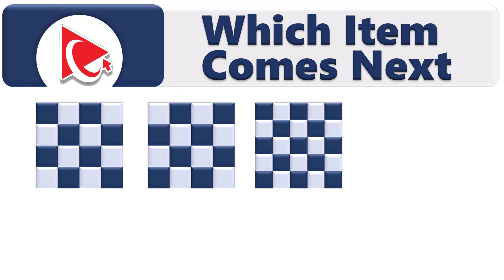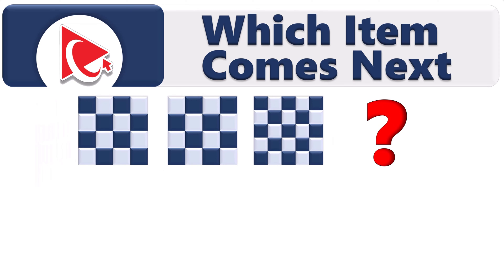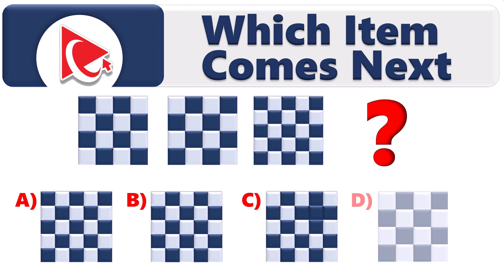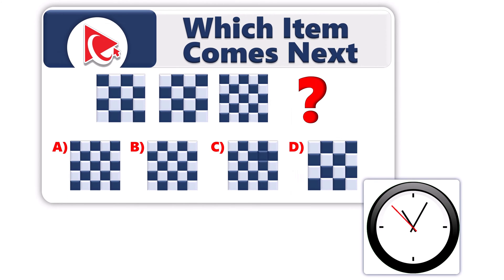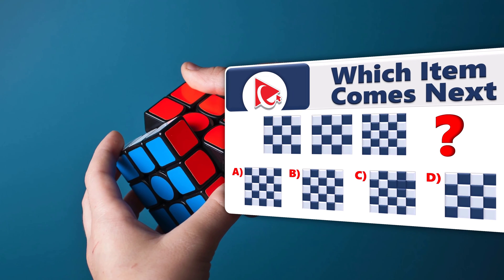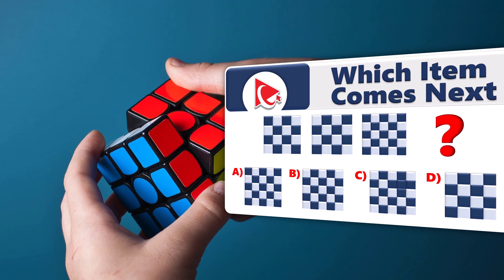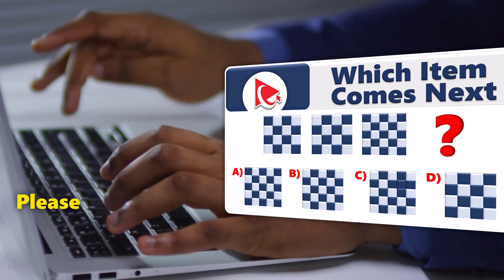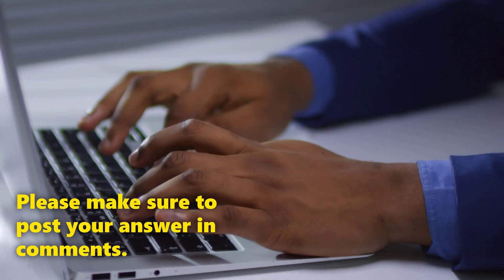You're presented with three squares, and you need to determine which item comes next. And you need to select the next square out of four possible choices: choices A, B, C, or D. Take a close look to see if you can come up with your answer. I have full confidence that you can solve this question on your own. And once you do, make sure to post your answer in comments of this video so I can give you my feedback.